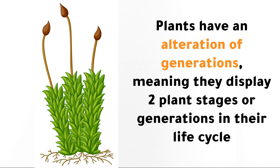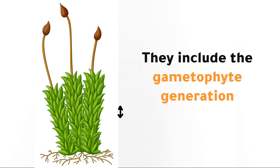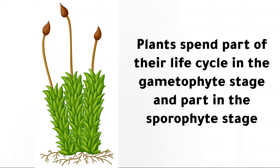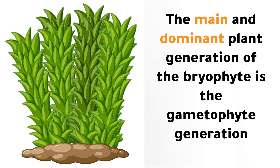Plants have an alternation of generations, meaning they display two plant stages or generations in their life cycle. They include the gametophyte generation and the sporophyte generation. Plants spend part of their life cycle in the gametophyte stage and part in the sporophyte stage. The main and dominant plant generation of the bryophyte is the gametophyte generation.